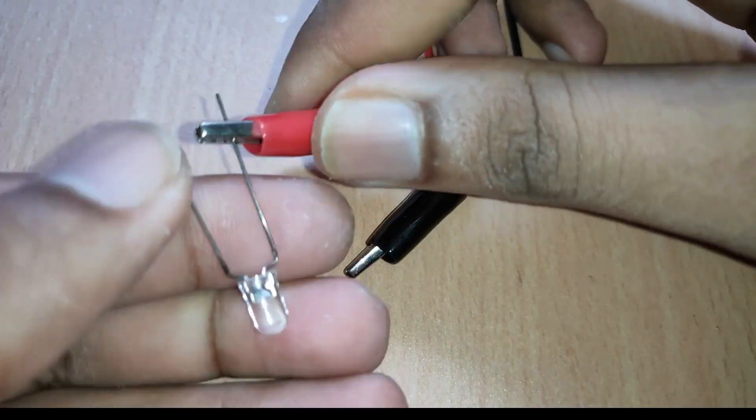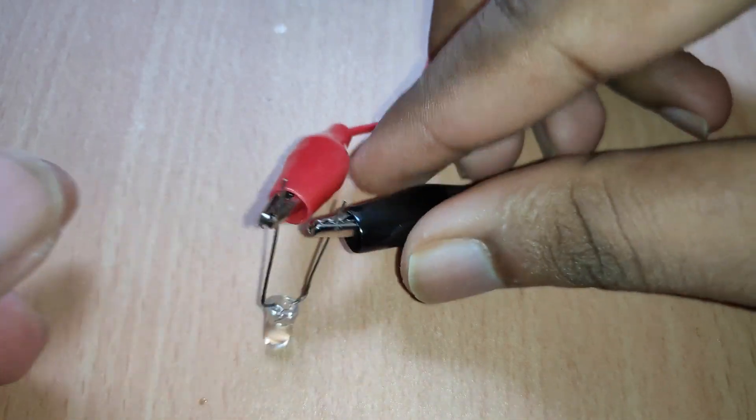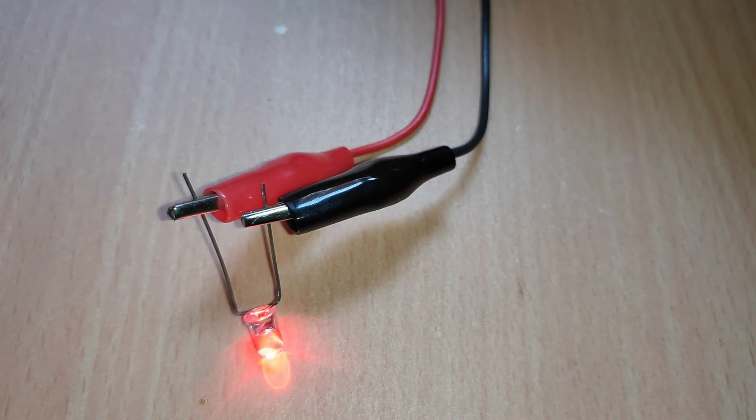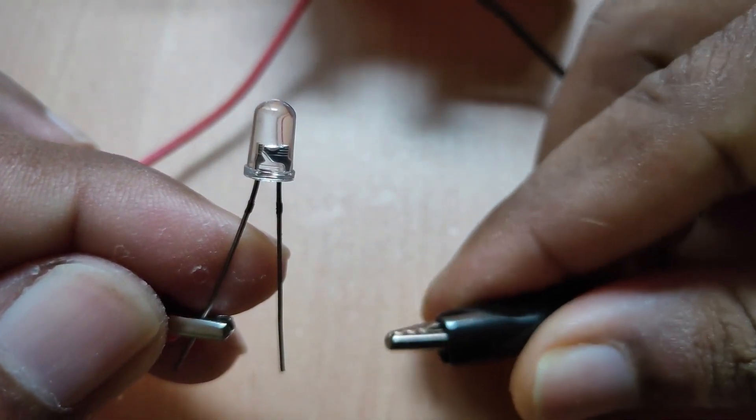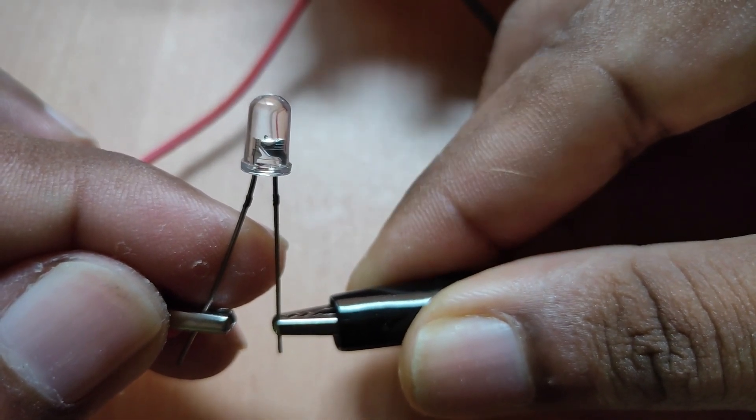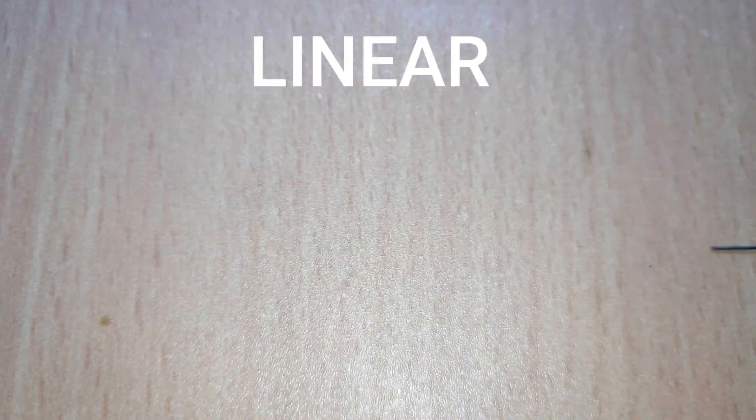When you want to turn on an LED, it is easy just by directly connecting it to the power supply, only in the case of a lower voltage. But when we are forced to use a higher voltage, in this case at 20 volts, the LED dies immediately as soon as I connect it. So how can we prevent it?